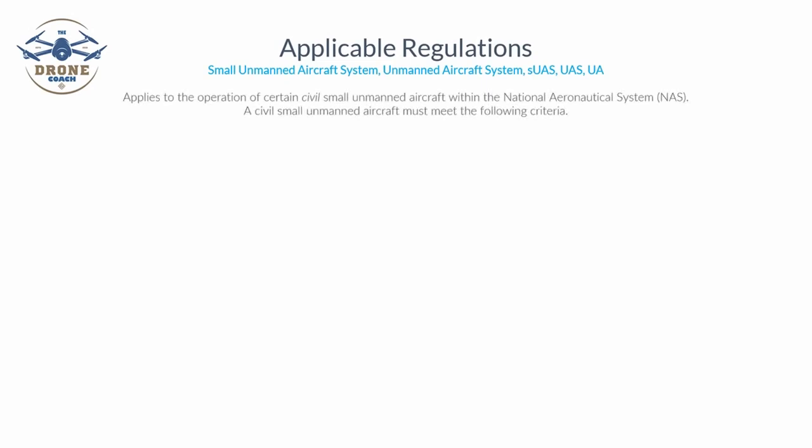Throughout these lessons, we'll be referring to small unmanned aircraft systems using various terms: small unmanned aircraft systems, SUAS, UAS, UA, and also simply 'aircraft.' This lesson pertains to the operation of certain civil small unmanned aircraft within the National Airspace System, the NAS.